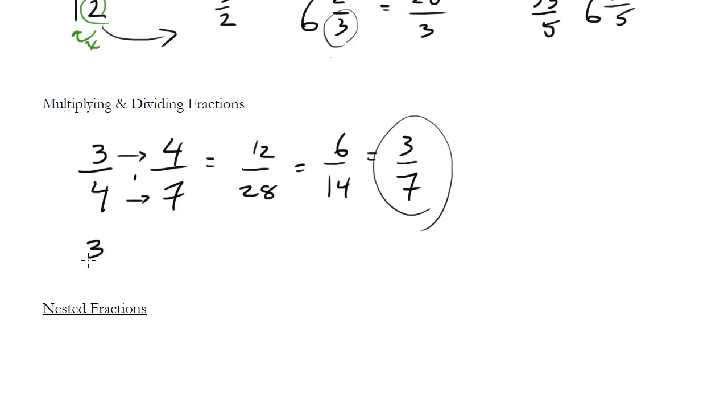How about 3 fourths divided by 7 eighths? So to divide, the easiest thing to do is just flip this guy over, take its reciprocal, we'll have a whole video about reciprocals in a second, and multiply them. So this is the same thing as 3 fourths times 8 sevenths. And we just multiply across, we get 24 over 28 which simplifies down to 12 over 14 which again, simplifies down to 6 sevenths.